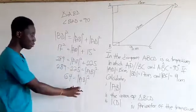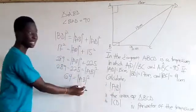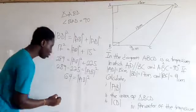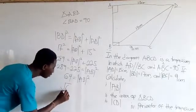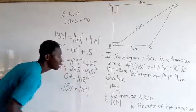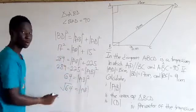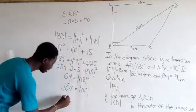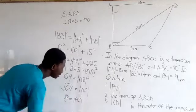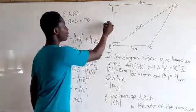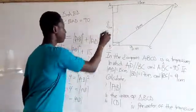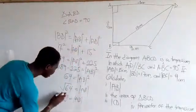We want AB, not AB squared, so we are going to take the positive square root. The square root of 64 equals AB, and root 64 gives us 8. So AB is 8cm.